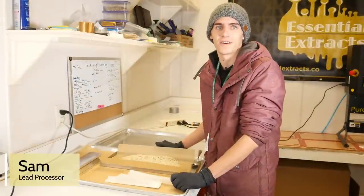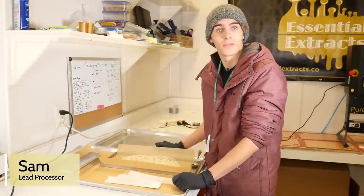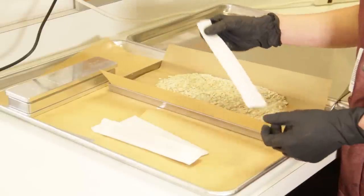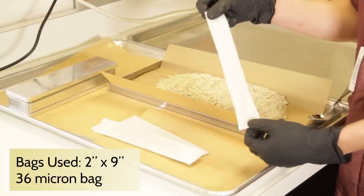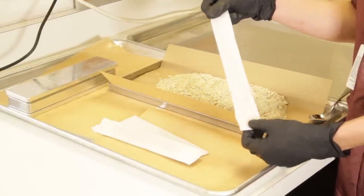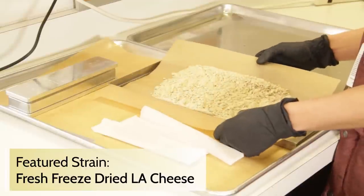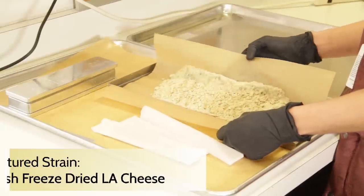Hi, this is Sam at Essential Extracts. I'm the lead processor over here. Here we're packing up some of the raw product into the pure pressure bags. We're using the 36 micron bags for the hash. We have some full spectrum water hash we'll be packing into these bags.